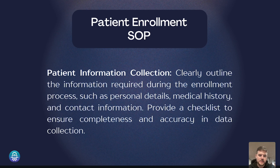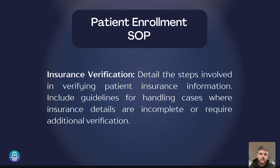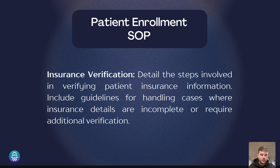Patient information collection is something you want to clearly outline because it's required during the enrollment process — things like personal details, medical history, and contact information. You provide a checklist to ensure completeness and accuracy. Next, insurance verification: you want to detail the steps involved in verifying the patient's insurance information, including guidelines for handling cases where insurance details are incomplete or require additional verification, so your staff knows exactly what to do regardless of the scenario.